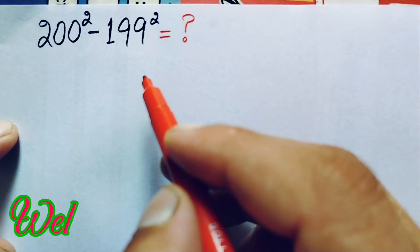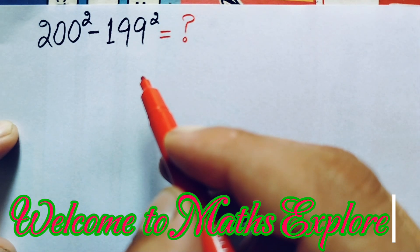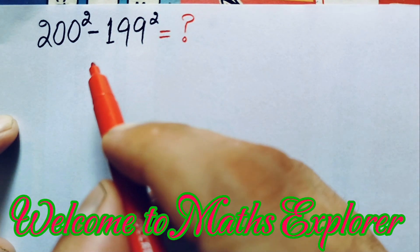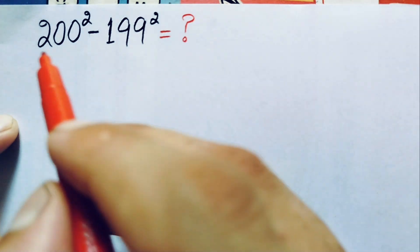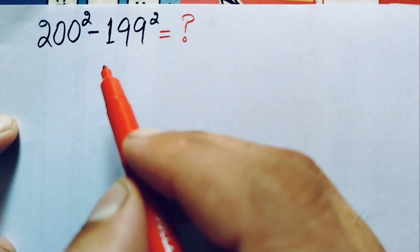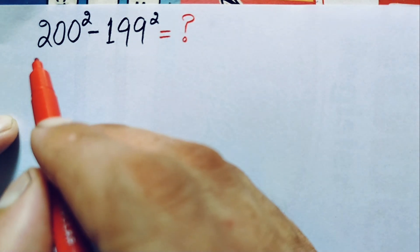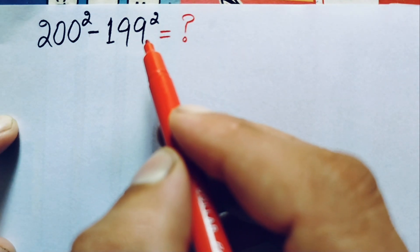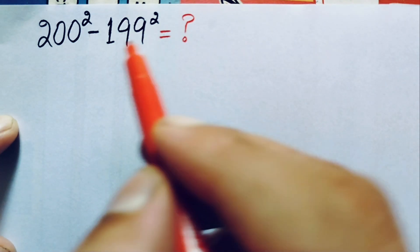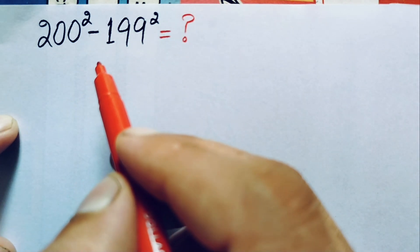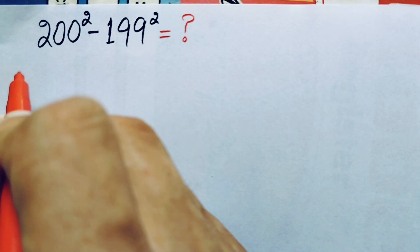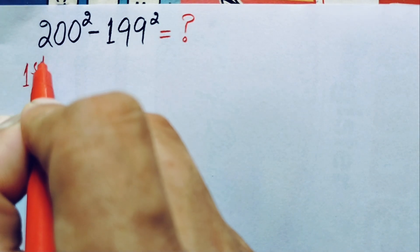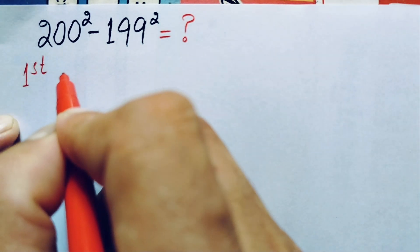Hello everyone, you are welcome to Math Explorer. In this video, I'm going to solve this nice math problem using three different methods. The problem is 200 squared minus 199 squared.